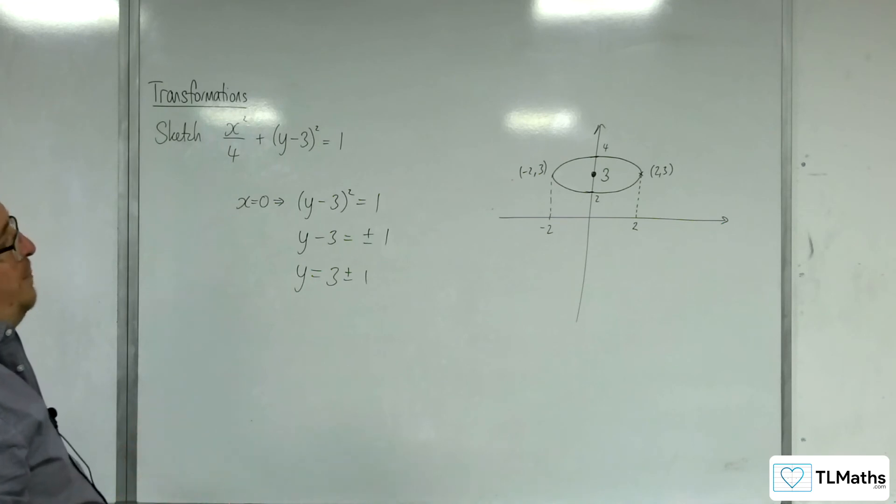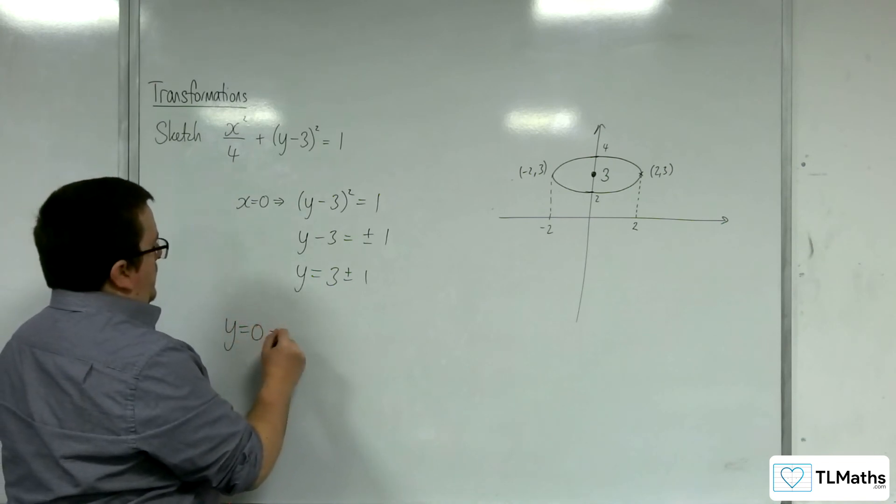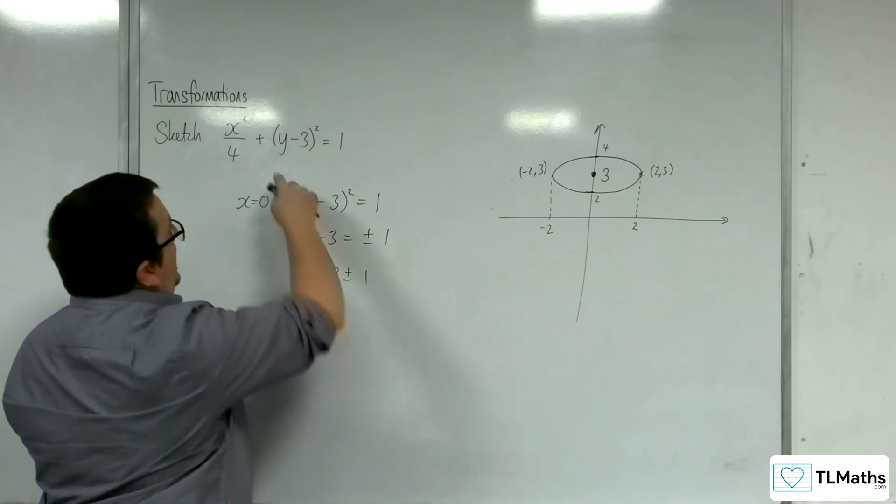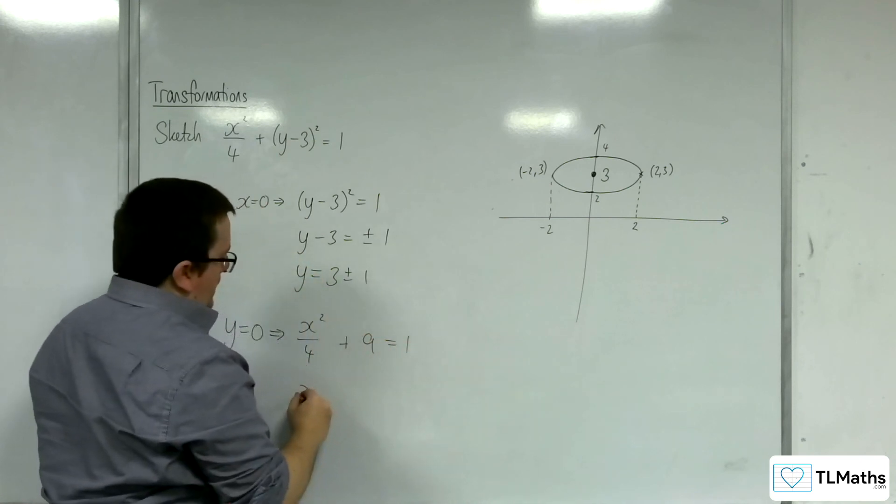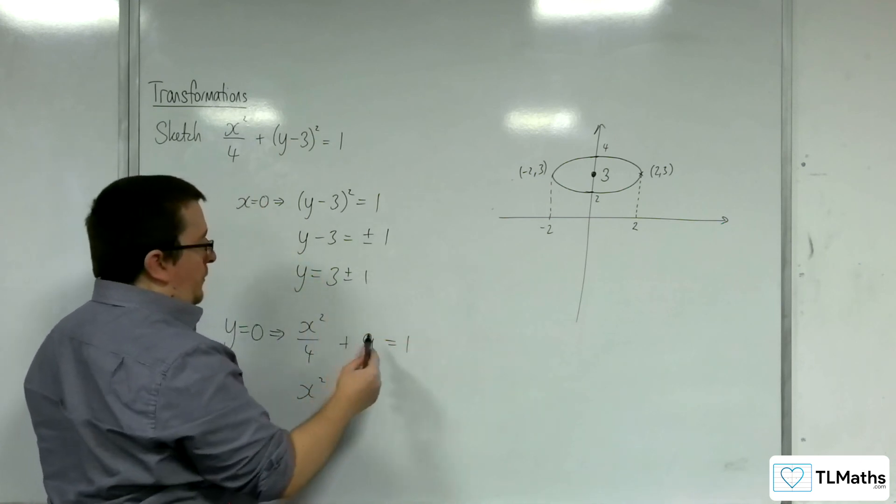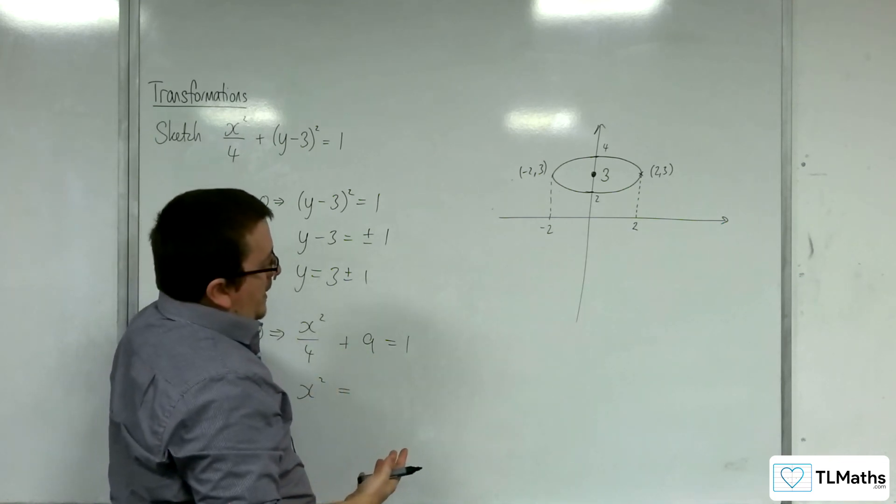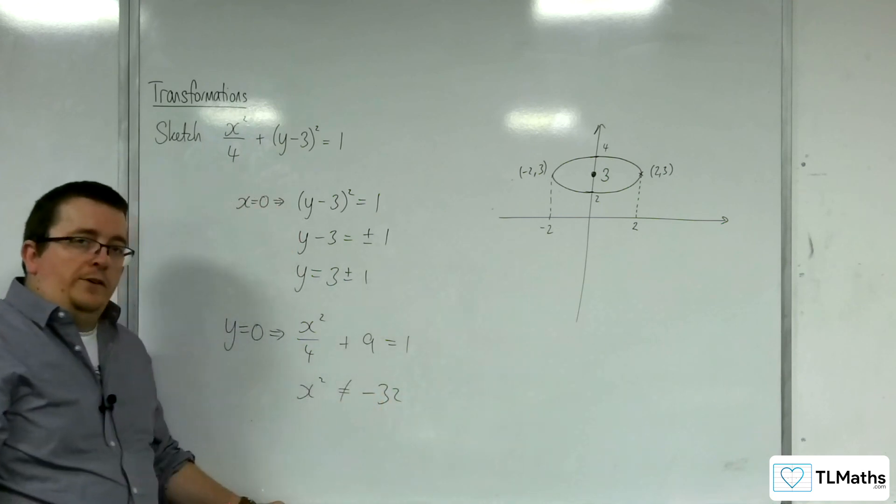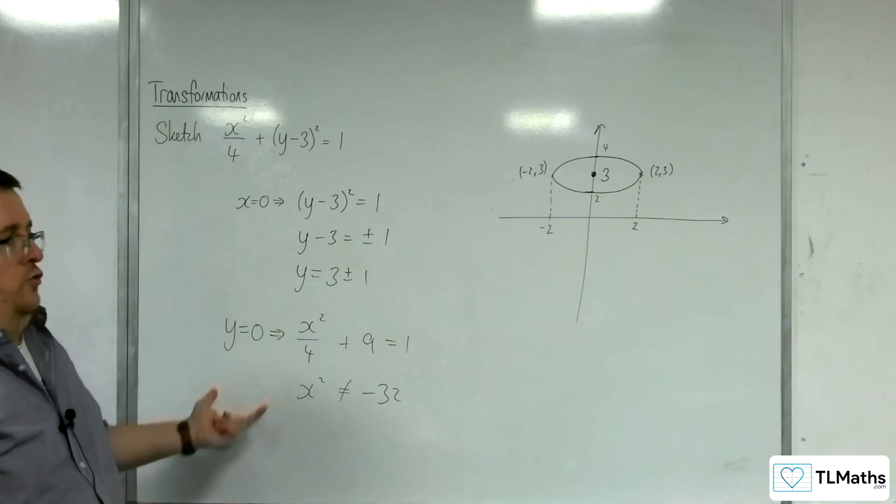If you'd try to put in y equals 0, then you would have got x squared over 4, and then 0 take away 3 and then squaring it is plus 9. And then you would have got x squared is equal to, well, subtract 9 from both sides, you get minus 8 times by 4 is minus 32. And x squared can't be equal to minus 32 if x is real. So that's just saying that it's not crossing the x-axis.